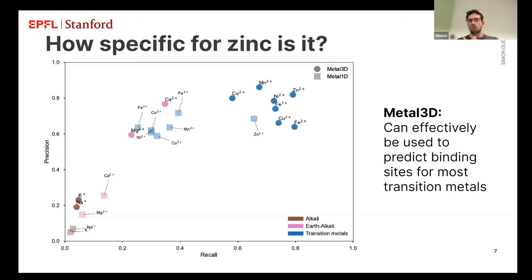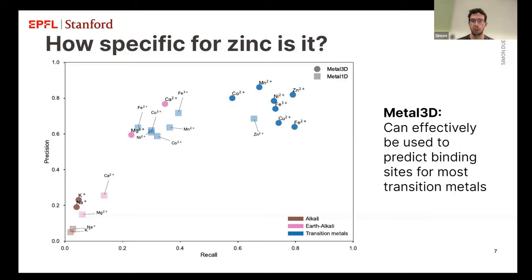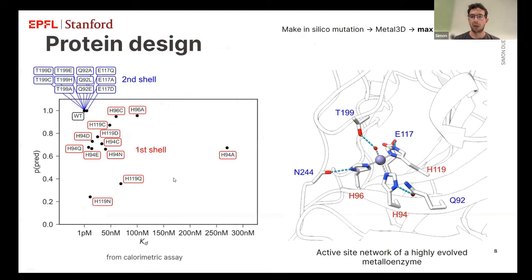You might ask: we trained only on zinc — what about all other metals? We evaluated the specificity for zinc by running our model on a random sample of other metalloproteins. As expected, precision-recall is best for zinc, but the model also does pretty well for all other transition metals. This is related to the physical constraints of metal ion binding — those ions have similar radii and similar charge. Metal binding sites that bind zinc could also bind iron or copper. In fact, if you have zinc and copper in your buffer, the zinc protein will bind copper because copper has higher affinity for the cysteines than zinc. The model does much worse for alkali or earth alkali ions, because those have very different binding modes and atomic radii.